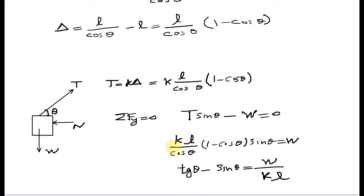I substitute T here: KL over cosine theta times one minus cosine theta times sine theta equals W. I can rewrite this equation as tan theta minus sine theta equals W over KL.